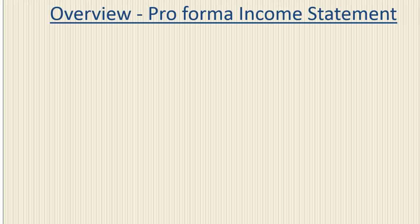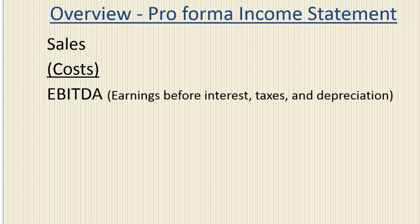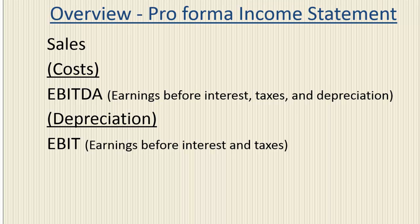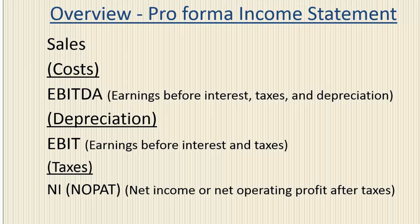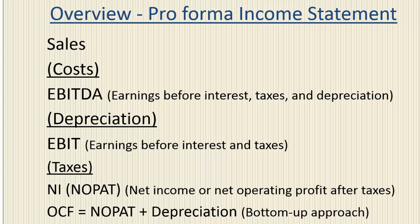To calculate the operating cash flows, we are going to use pro forma income statements. We start with sales, subtract costs to get EBITDA (earnings before interest, taxes, depreciation, and amortization), then deduct depreciation to get EBIT. We subtract taxes to get net income or net operating profit after taxes. When evaluating projects, we assume interest expense is zero. The operating cash flow is calculated by adding depreciation back to net operating profit after taxes — this is known as the bottom-up approach.